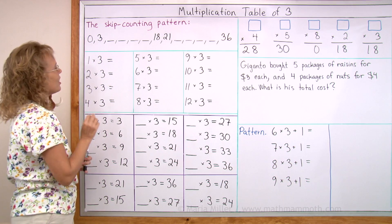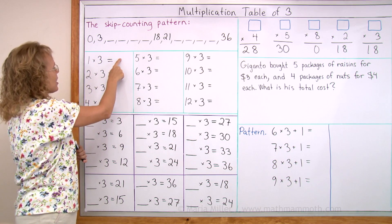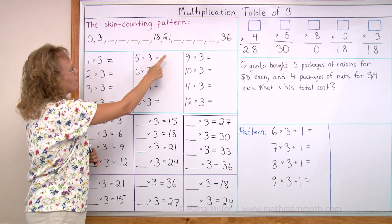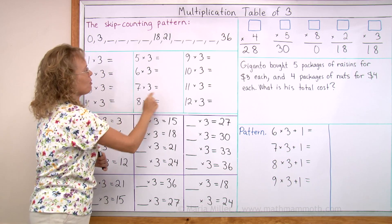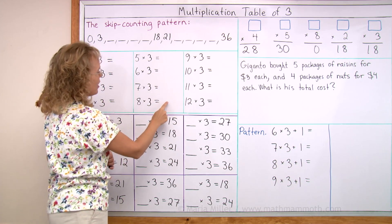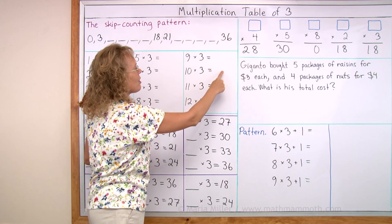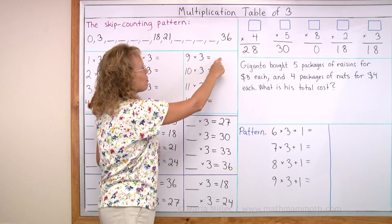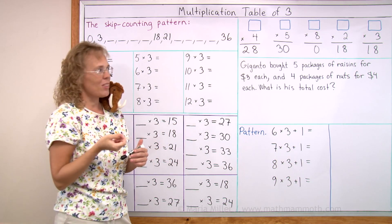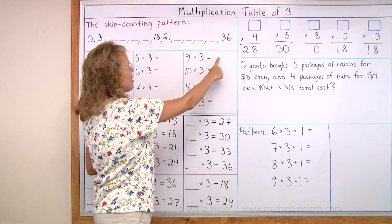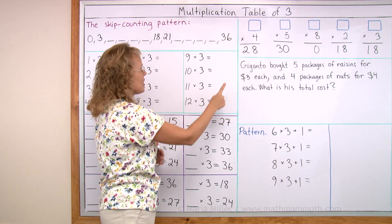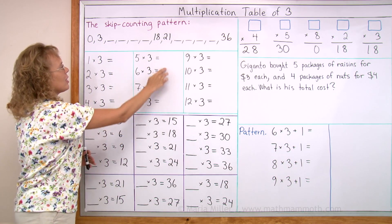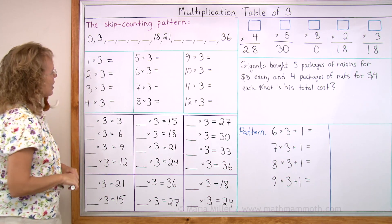And here I have the multiplication table of 3. As usual, the numbers from the skip counting list go here: 3, 6, 9, 12, 15, 18. 7 times 3 is often difficult for children — it is 21. 24, 27, and 30. 30 is of course easy: 3 times 10, 10 times 3 is 30. And so 9 times 3 is just 3 less than 30 — you can go 30 minus 3, that's 27. And then 33 is easy, and then 36 — just 3 more. So some of these are the most difficult ones. Now let's practice.